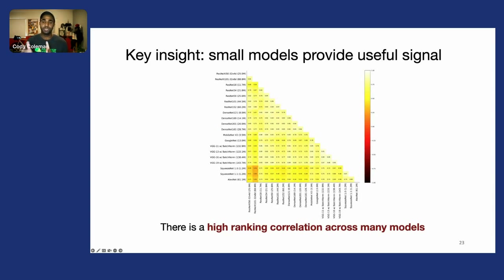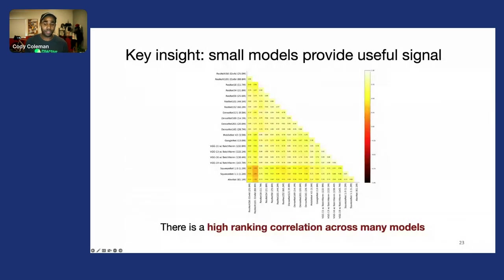Here in this plot, we took a variety of model architectures and sizes trained on ImageNet and calculated how correlated their rankings were to one another. We found that there's very high ranking correlation across many different models.